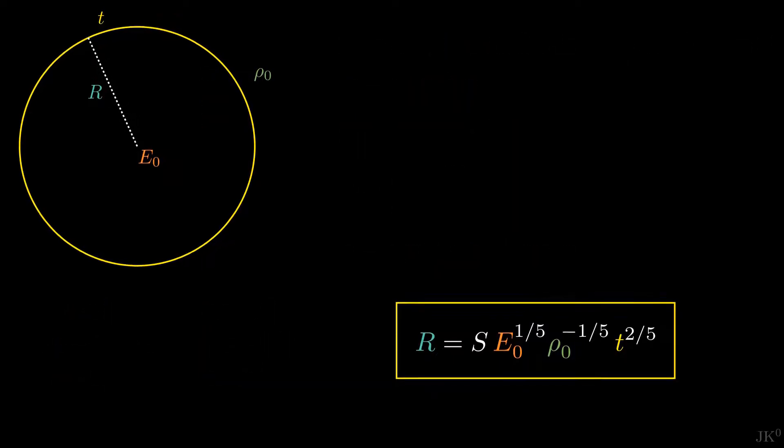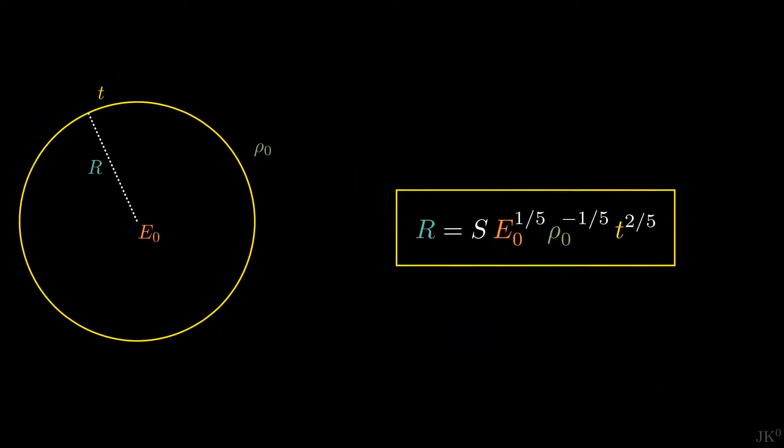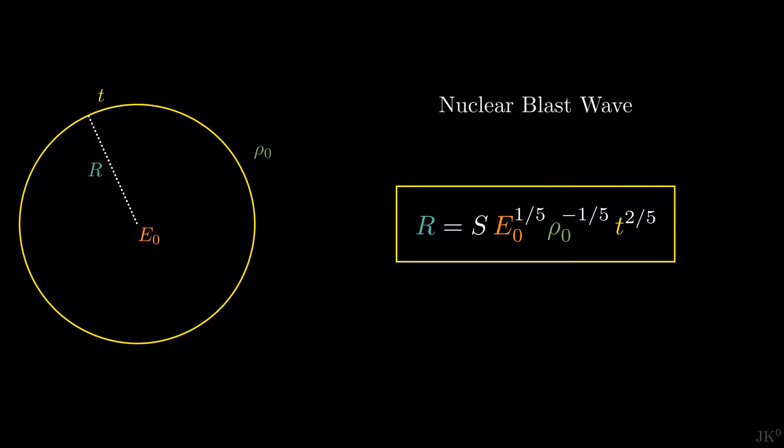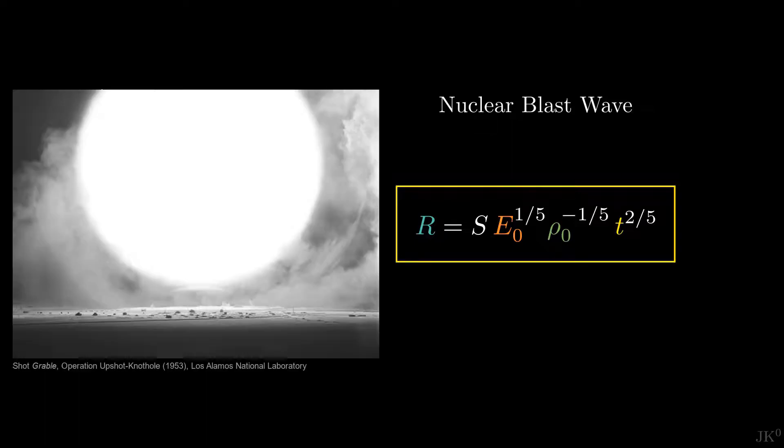Here we find some expected properties. The most obvious is that as time passes, the blast wave gets bigger. Another is that a bomb of higher yield will produce a bigger blast wave, which also makes sense. So this is it. This formula tells us precisely the size of a nuclear blast as a function of time and the yield of the bomb.